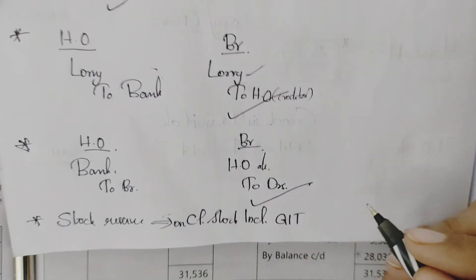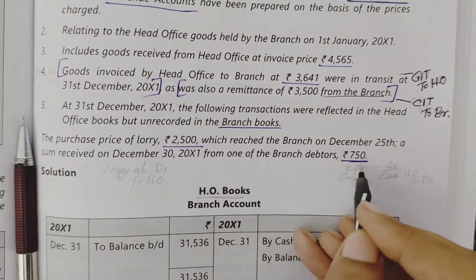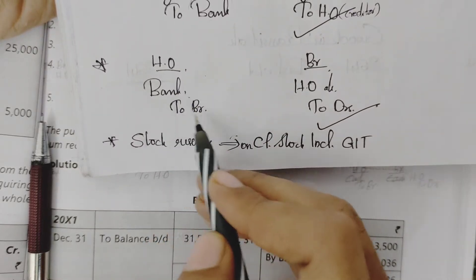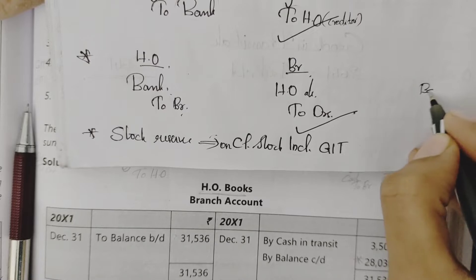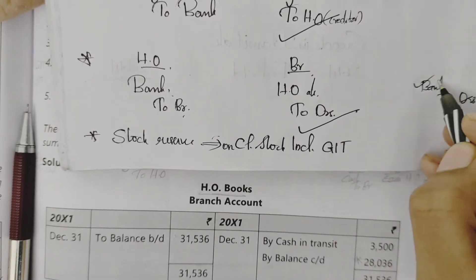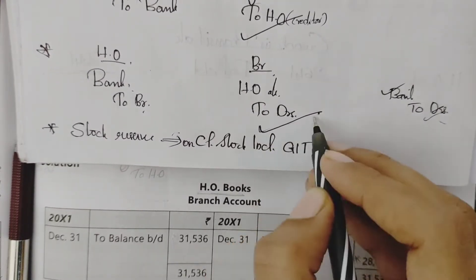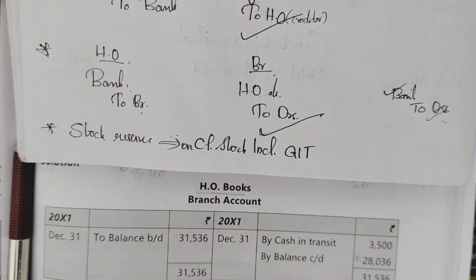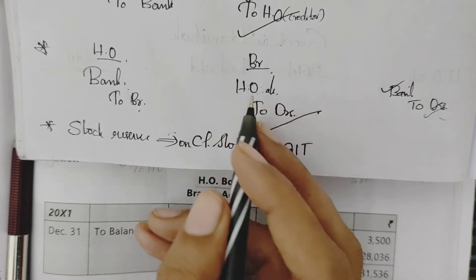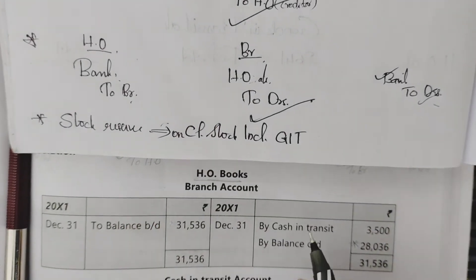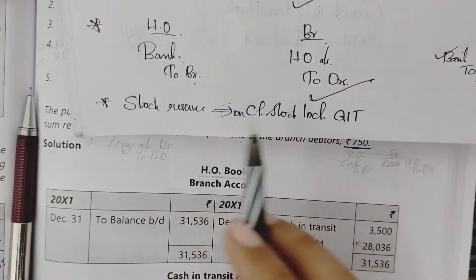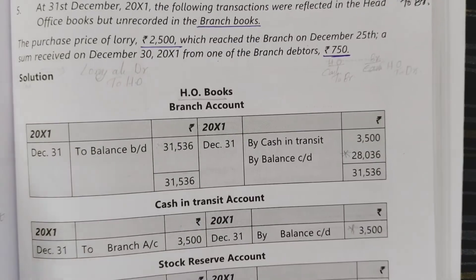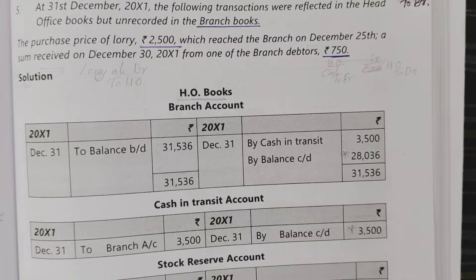Head office collected $750 from one of the branch debtors. The entry in the head office books is: debit bank account, credit branch account. The corresponding entry in the branch books is: debit head office account, credit debtors. Closing stock includes goods in transit. Closing stock reserve is calculated, and we check the index for closing stock without the stock reserve adjustment.